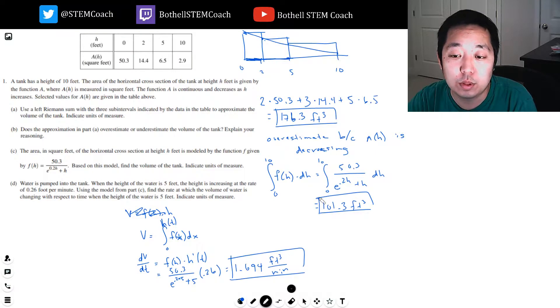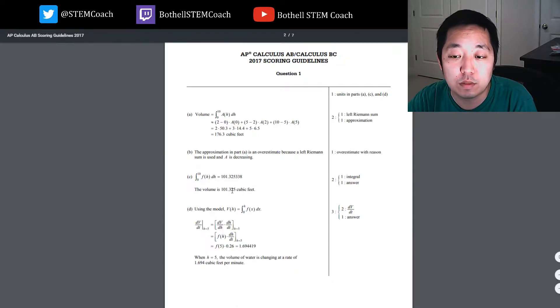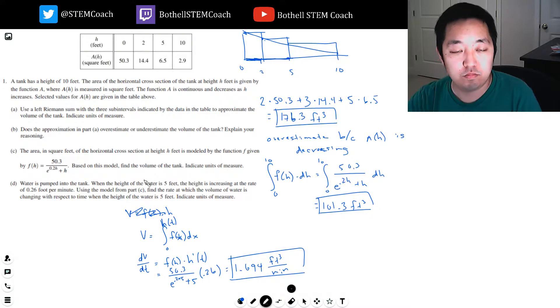C integral is 101.325. Yeah, they did two more decimal places. I should have not been lazy about that. Using the model V of H equals the integral from 0 to H of F of X DX. That's right. 1.694 cubic feet per minute. Okay.